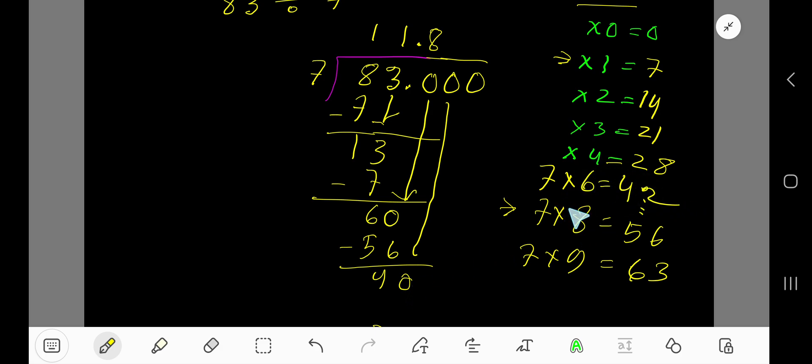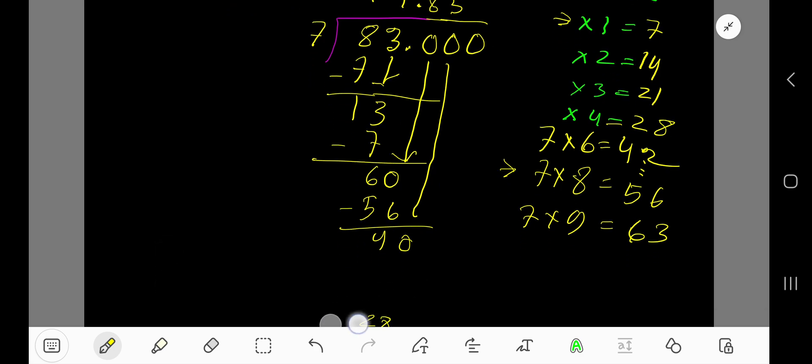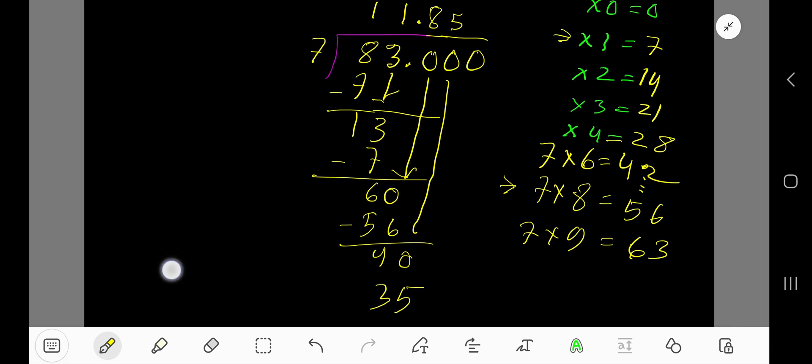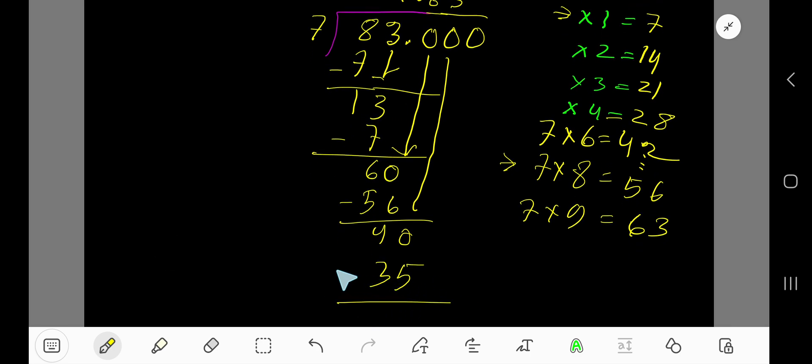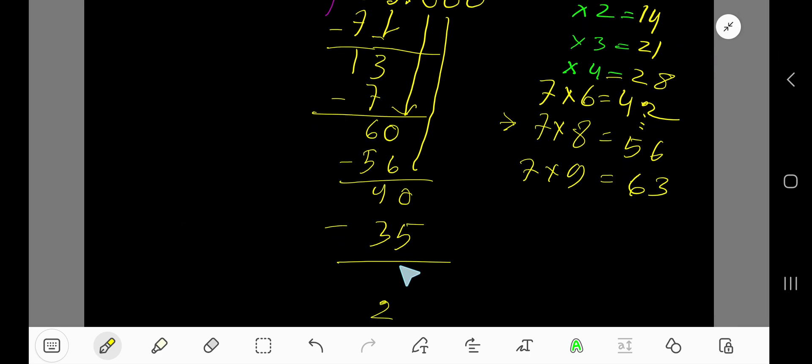Write 5. 5 times 7 equals 35. If you subtract, you're getting 5.